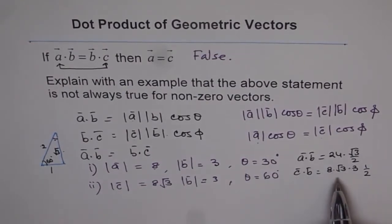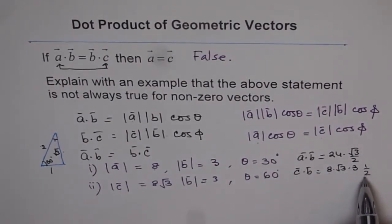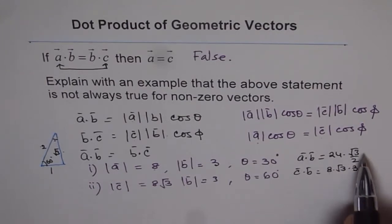So what do we get? We get 8 times 3 is 24, square root 3 over 2. Do you see that? Same combination.